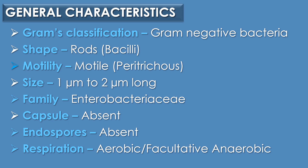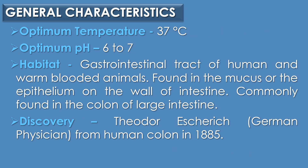The mode of respiration is aerobic respiration or facultative anaerobic respiration. The optimum temperature for the cultivation of E. coli is 37°C and the optimum pH is 6 to 7. Regarding the habitat, the primary habitat of E. coli is in the gastrointestinal tract of humans and many other warm-blooded animals. It is found in the mucus or the epithelium on the wall of the intestine, most commonly found in the colon region of the large intestine.